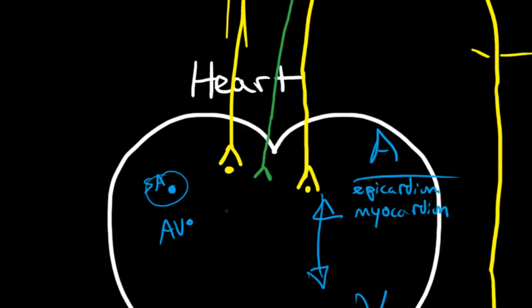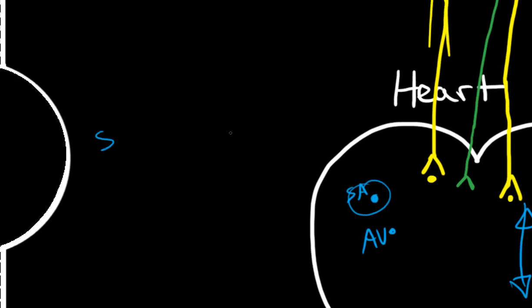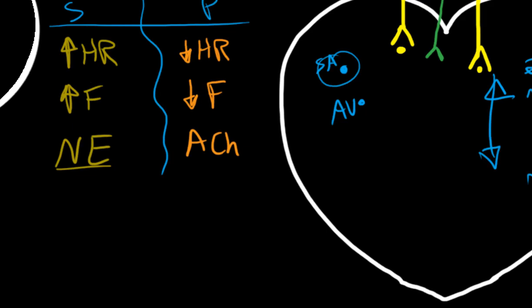So what are these fibers doing when they get there? And we mentioned earlier that sympathetic and parasympathetic had two totally contrasting functions. Parasympathetic will act to decrease heart rate, also decrease force of contractility, and it's going to be using the neurotransmitter norepinephrine.